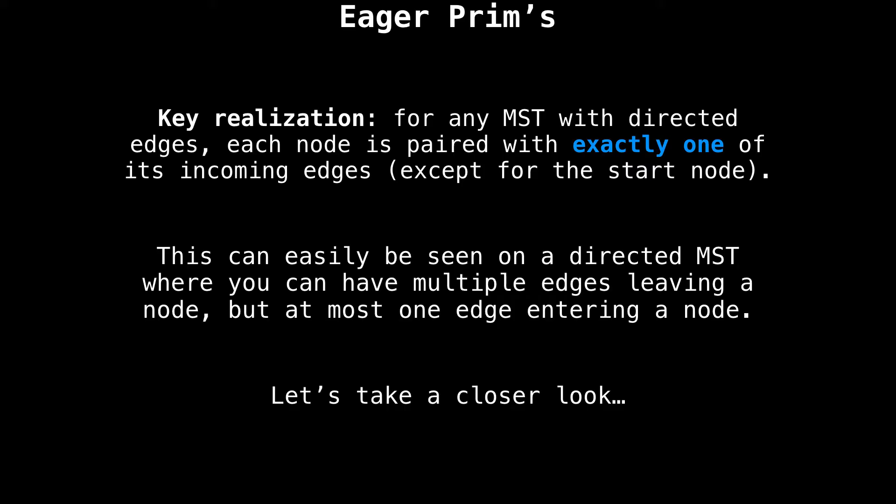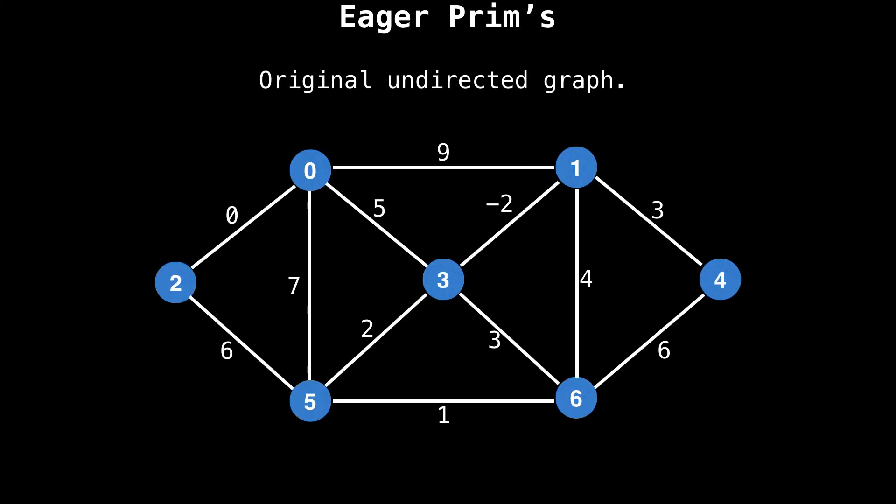For this all to make sense, there's a key realization that needs to happen. And that is: for any MST with directed edges, each node is paired with exactly one of its incoming edges — except for the start node. One way to see this is on a minimum spanning tree with multiple edges leaving a node, but only ever one edge entering a node. Let's have a closer look at what I mean.